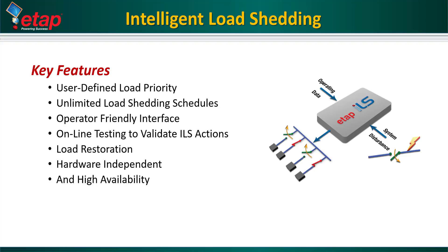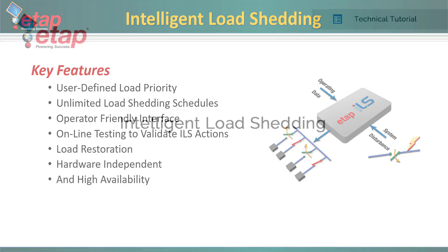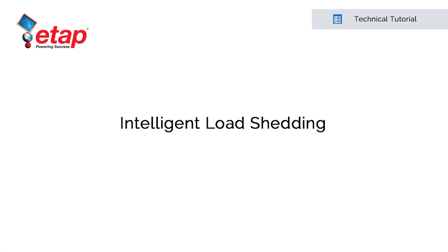In summary, ILS is a powerful, flexible, user-friendly load shedding solution for systems operating generation and critical loads where non-interrupted operation is a must. This proactive, faster-than-real-time load shedding system is used by many operators in the industry. Thank you for listening to this presentation. For more information or to ask any questions, please contact us at sales@etap.com. We look forward to working with you.